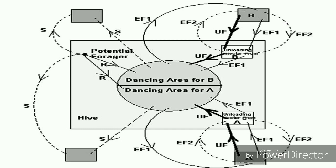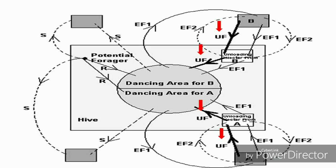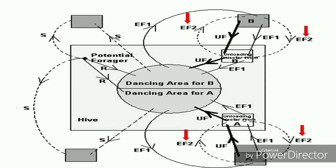The foraging bee takes a load of nectar from the source and returns to the hive, unloading the nectar to the food store. After unloading the food, the bee has the following options: (1) it might become an uncommitted follower after abandoning the food source (UF); (2) it might dance and then recruit nest mates before returning to the same food source (EF1); (3) it might continue to forage at the food source without recruiting bees (EF2). It is important to note that not all bees start foraging simultaneously. Experiments confirm that new bees begin foraging at a rate proportional to the difference between the eventual total number of bees and the number of bees presently foraging.